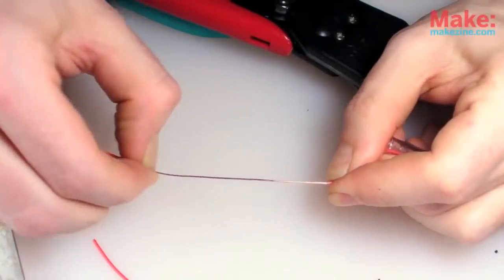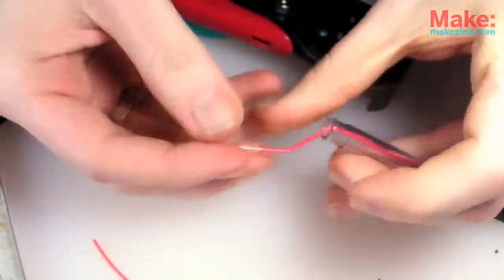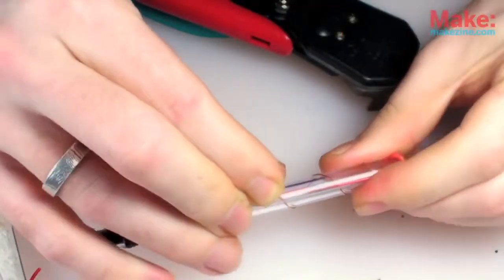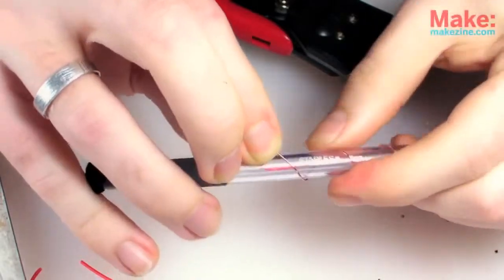Then just strip the rest of the wire, and wrap it around the outside of the barrel, so that it makes contact with my hand when I use it.